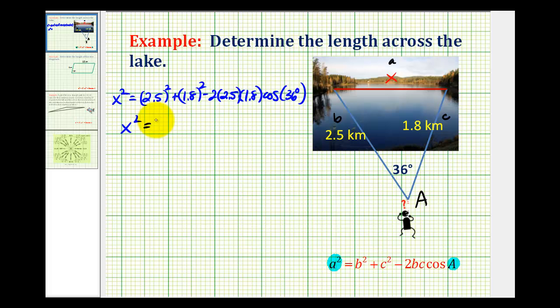So we're going to have x squared equals 6.25 plus 3.24 minus approximately 7.28.